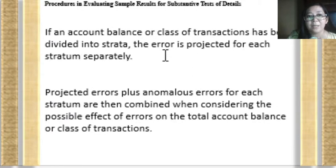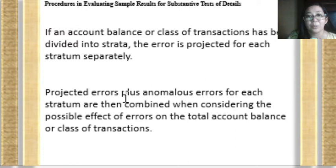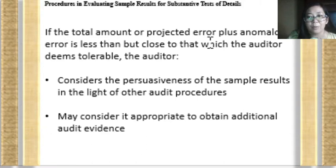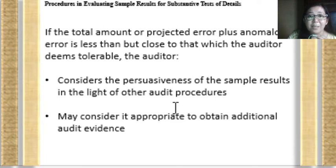If the account balance or class of transactions has been divided into different strata, the error is projected for each stratum separately. The projected errors plus anomalous errors for each stratum are combined when considering the possible effect on the total account balance or class of transactions. If the total projected error plus anomalous error is less but close to what the auditor deems tolerable, the auditor will consider the persuasiveness of the results and whether additional substantive procedures are needed.